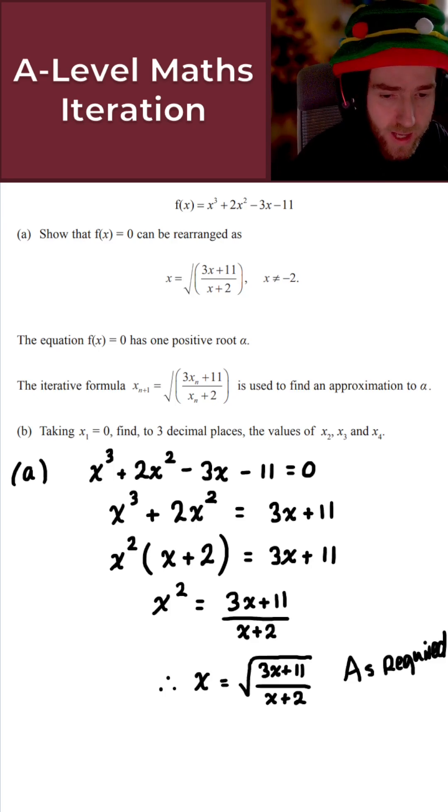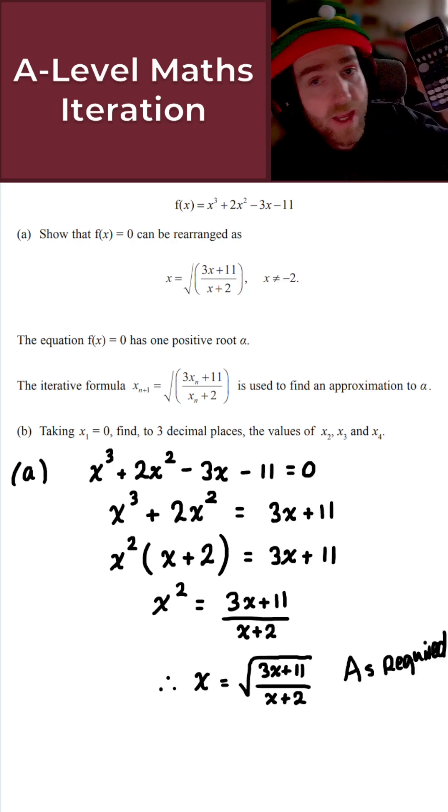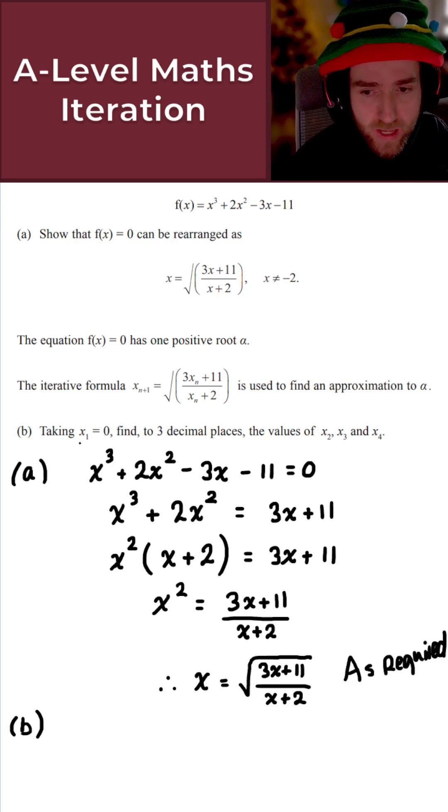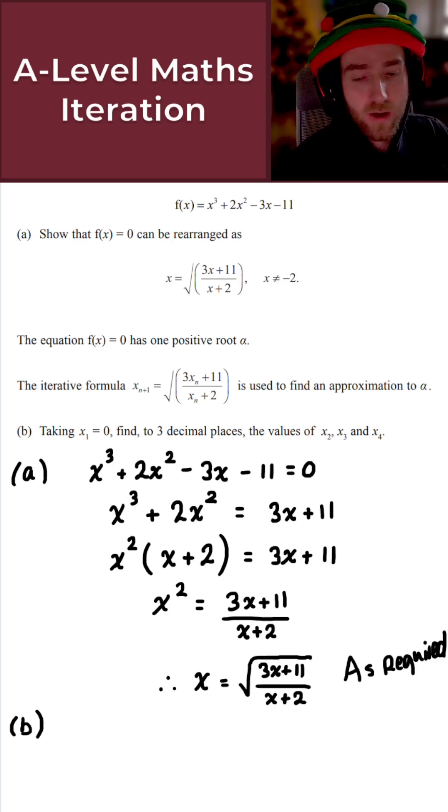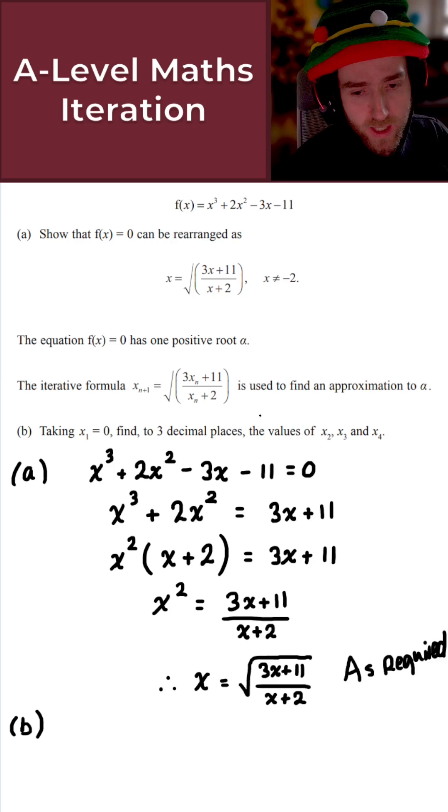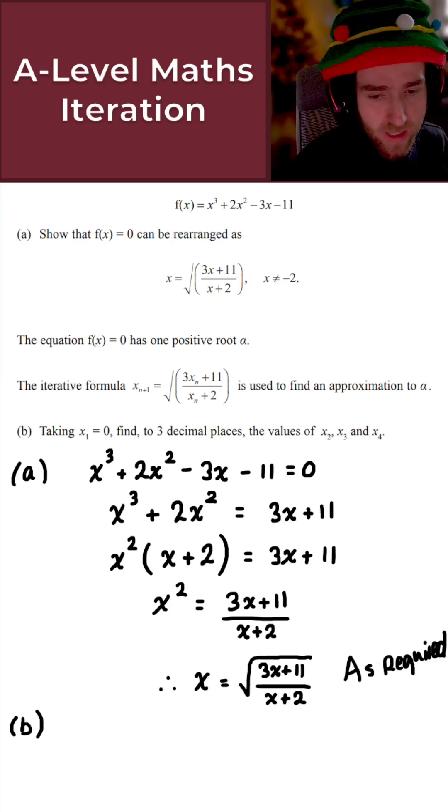And now for part B, what you need here is a calculator. So to perform iteration on your calculator, what we do is we input the first value here. So x1 equals 0. I just put 0 into my calculator and press Enter. And this just stores 0 into the memory of my calculator. What I'm then going to do is replace any xNs here in the iterative formula with the answer button or the answer function on your calculator.